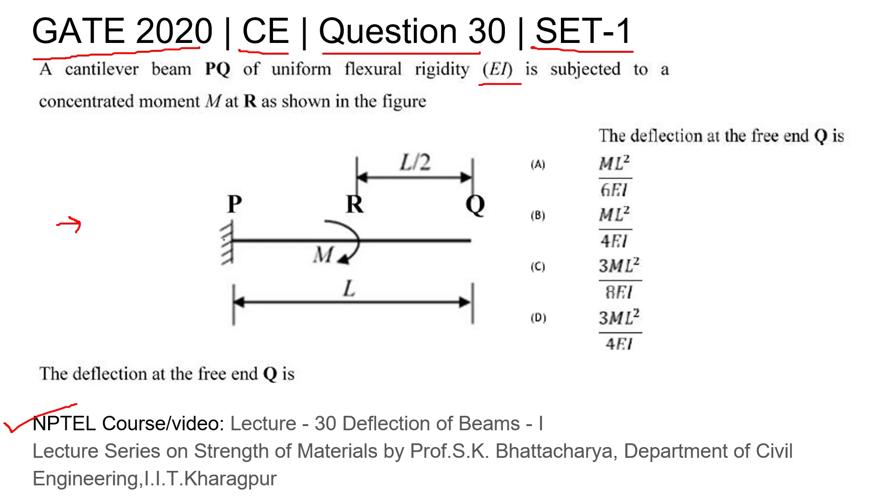They have given one cantilever beam, one end is fixed and one end is free. In middle of this, the total length is L, and in the middle one concentrated moment is applied in clockwise direction. He is asking for the deflection at the free end Q. So let's try to solve this question.